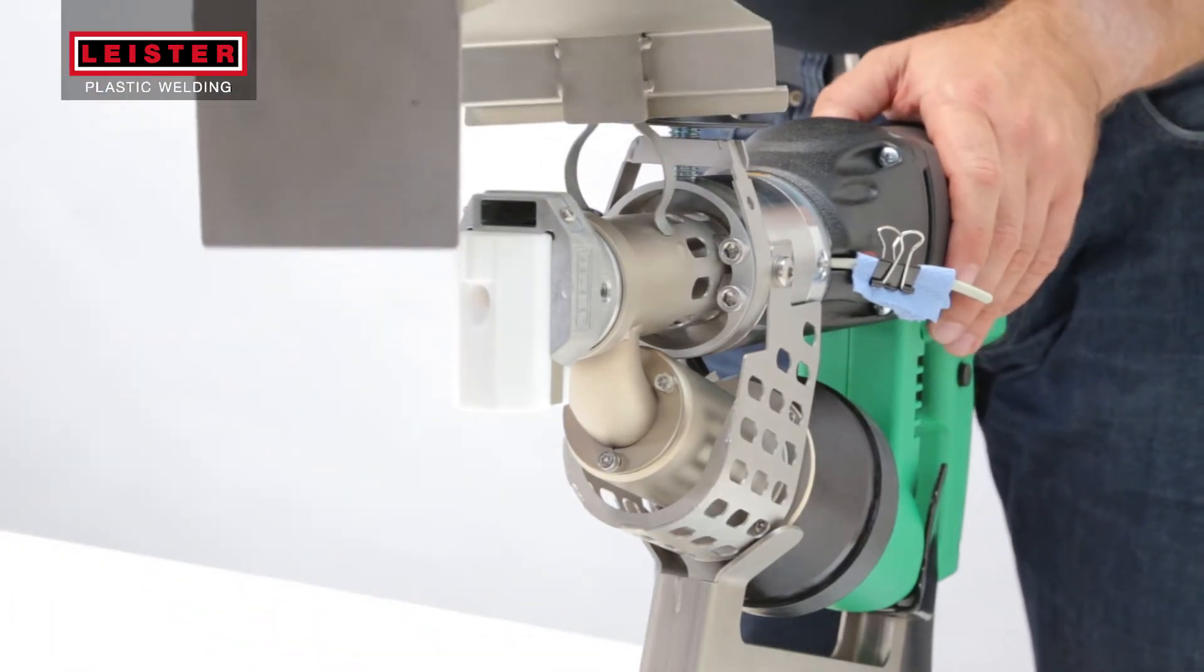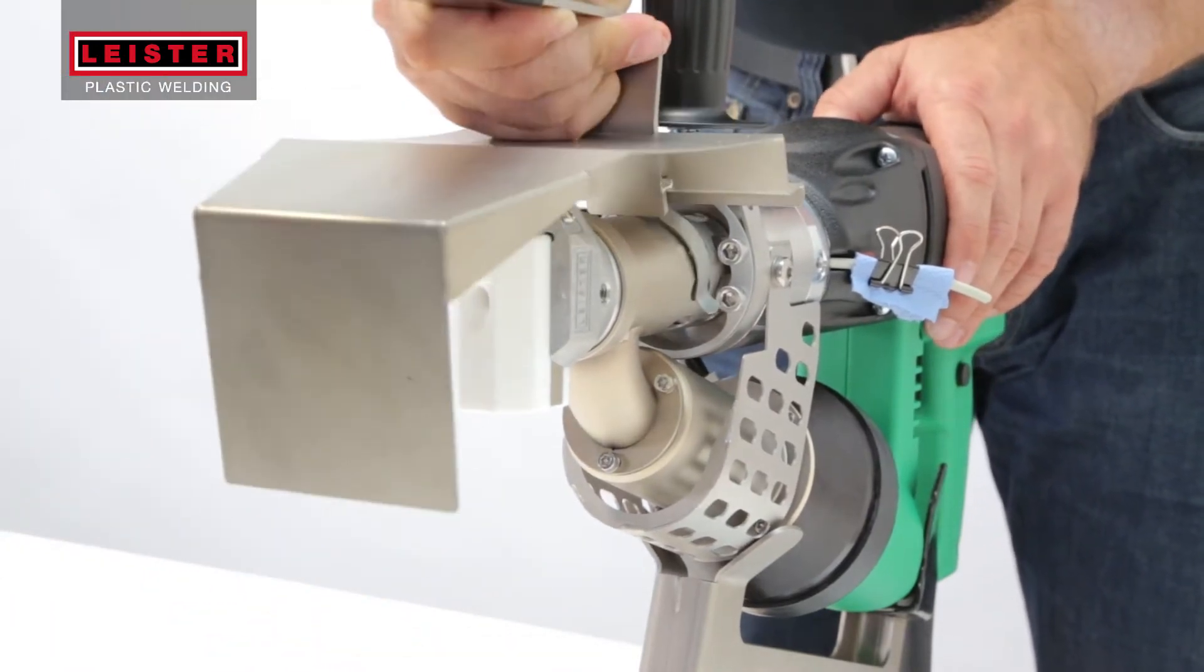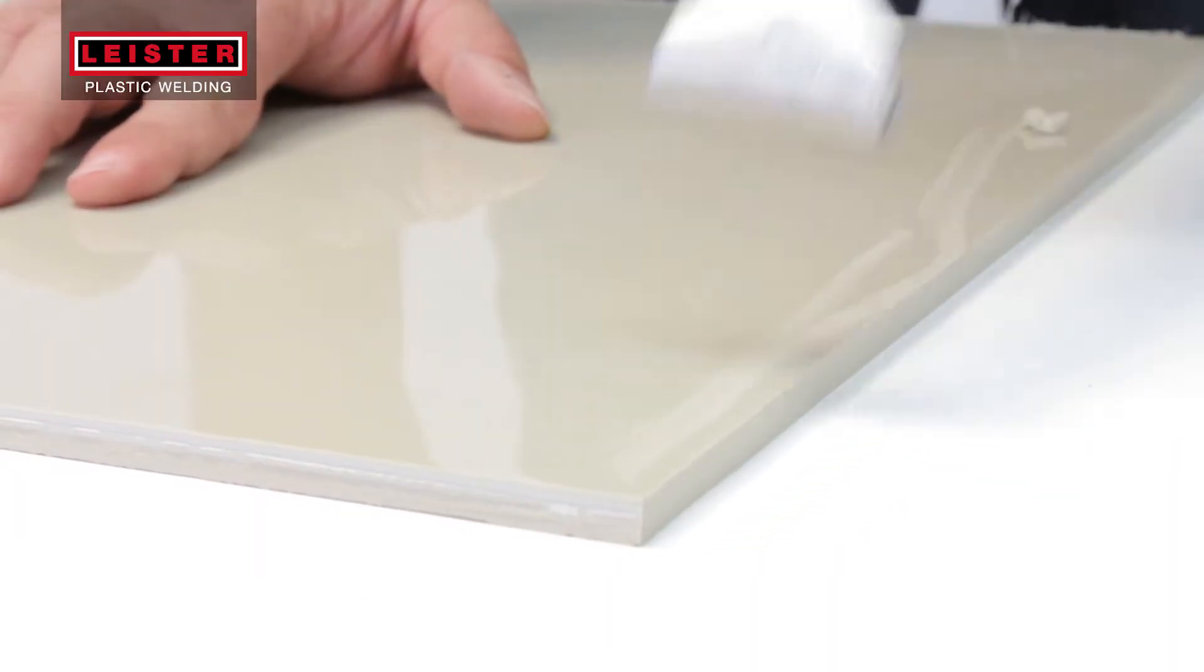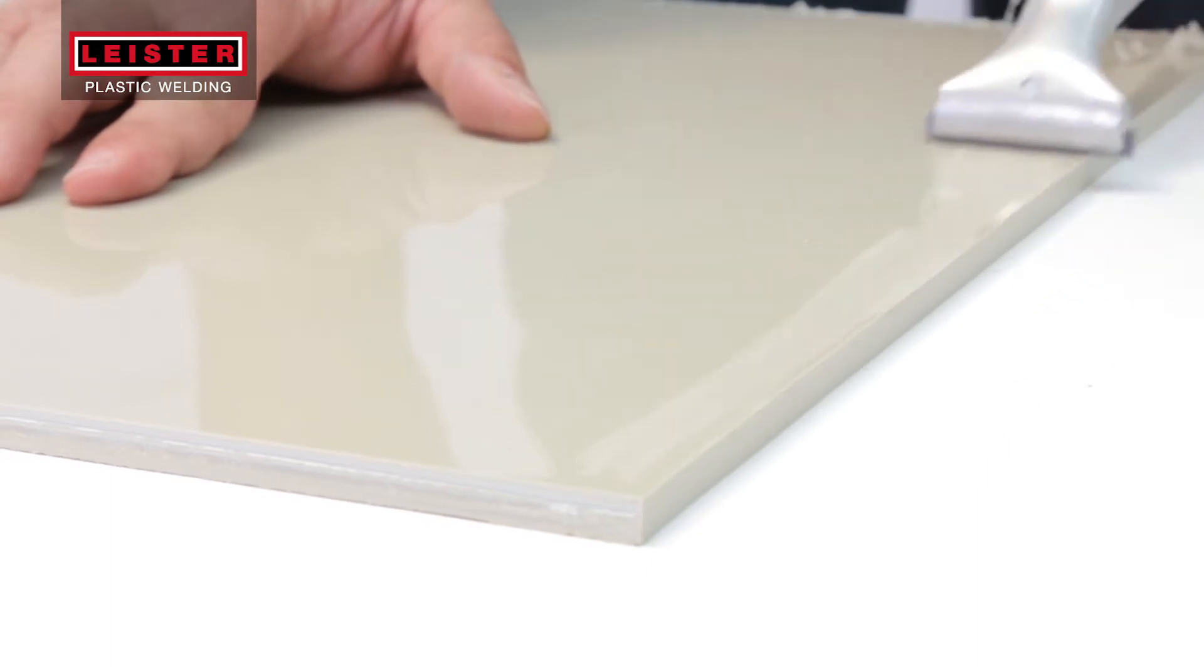Use a Leister preheating reflector to preheat the welding shoe and maintain welding shoe temperature while at rest. For an ideal welding seam result, remove the invisible oxide layer from your material using a scraper.